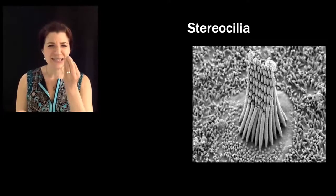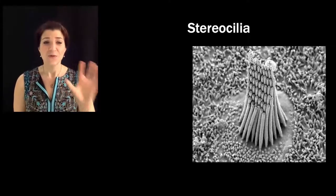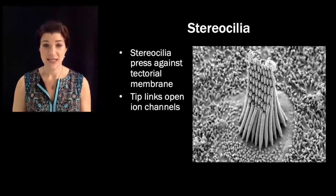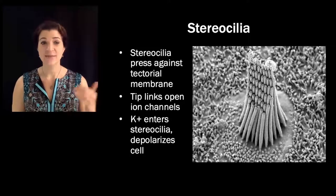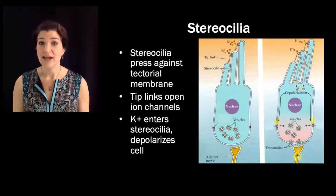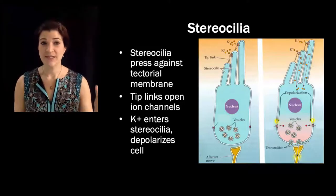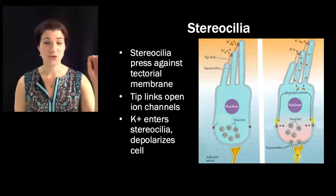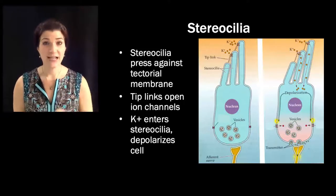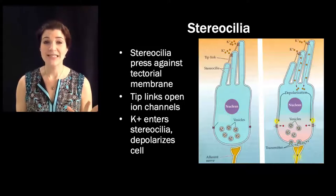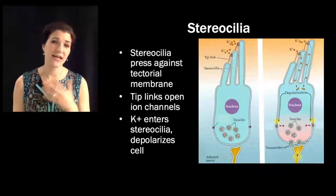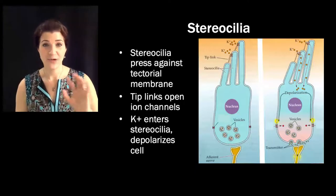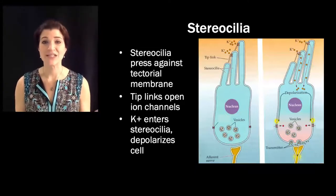Just as in vestibular transduction, when the stereocilia are pressed against the tectorial membrane, tip links open ion channels which allow potassium to enter the stereocilia and depolarize the cell. The schematic looks exactly like the vestibular system — the same tip link structure, the same kinds of ion channels — but it is now the pressure of the stereocilia on the tectorial membrane causing the ion channels to open. Unlike the vestibular system, we don't see different directions of motion; the basilar membrane always causes the stereocilia to press against the tectorial membrane in the same direction, so it always leads to depolarization.